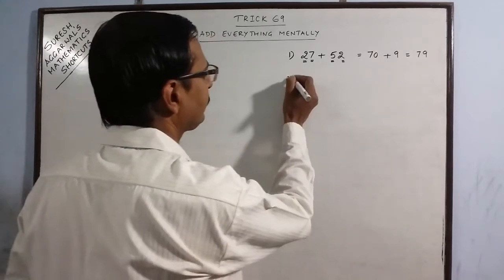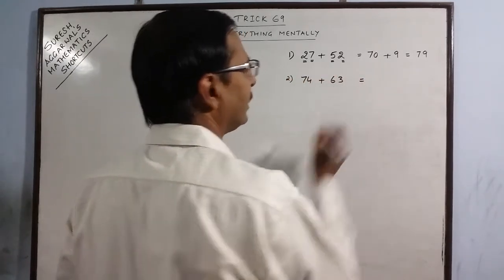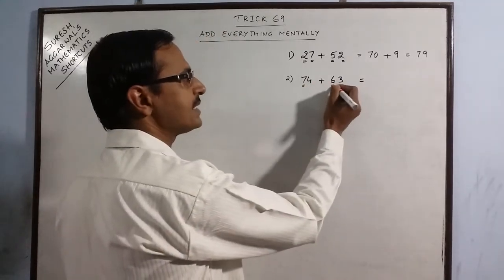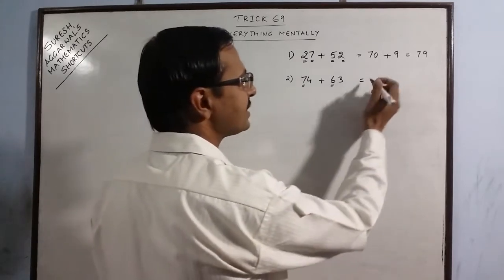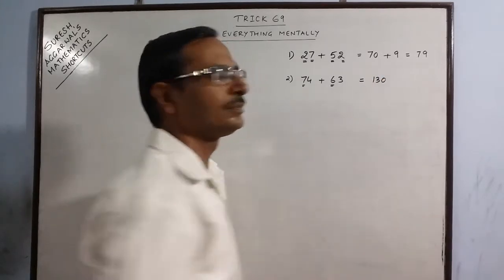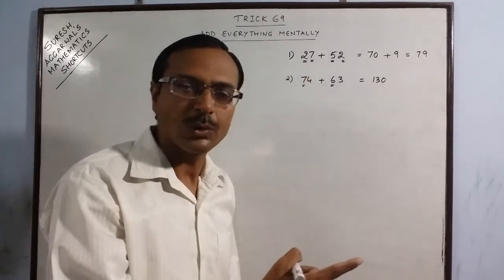Say we have 74 and 63. Now 7 plus 6. If you know single digit addition you can do this addition also. So 7 plus 6 is 13. Put a 0. Now because 7 and 6 are at the 10's places. So you put 1 0.